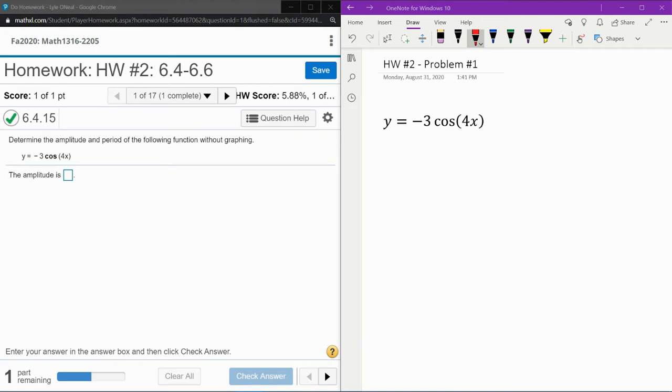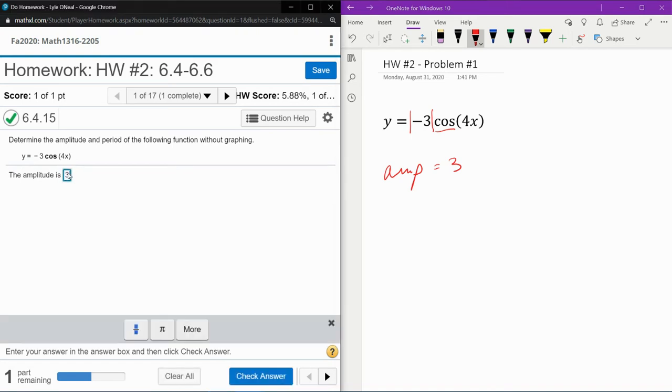So what we know is if we have a sine or a cosine—here we have cosine—the amplitude is the absolute value of the lead coefficient. So here we would expect the amplitude to be positive three. It's always the absolute value of the lead coefficient.